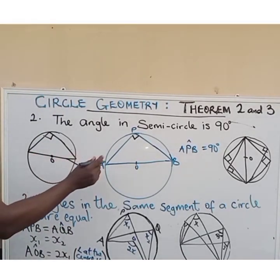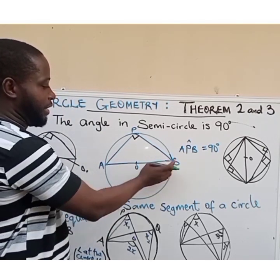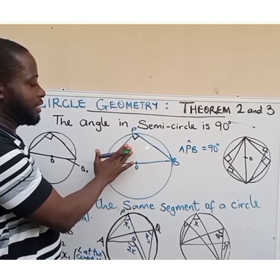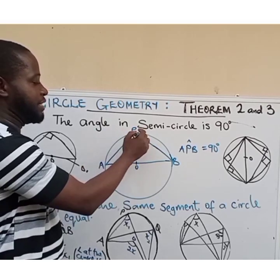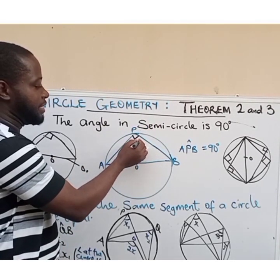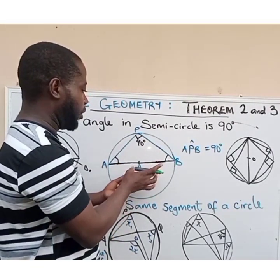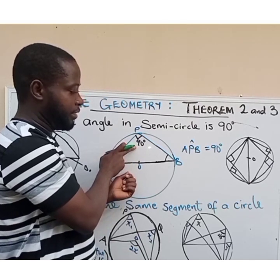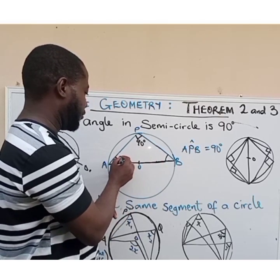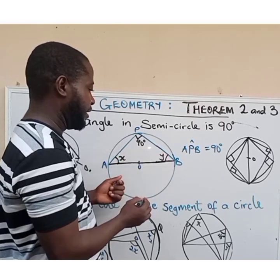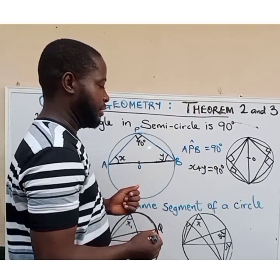So when you have this, the diameter has divided the circle into two equal parts giving us the semicircle. The angle formed at the circumference is a right angle — 90 degrees. As we know, the sum of angles in a triangle is 180 degrees, and we already have 90 degrees, so the remaining two parts will sum up to 90 degrees. So if we have x here and y here, then x plus y equals 90 degrees.